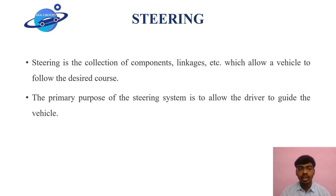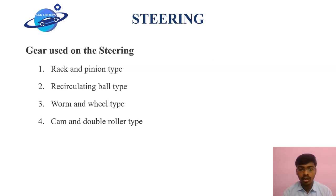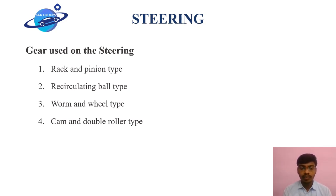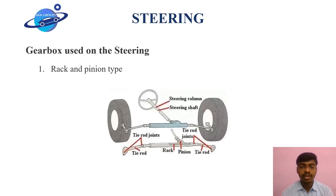The primary purpose of the steering system is to allow the driver to guide the vehicle. Now let's have a clear look at the gears used in the steering system. This is divided into four parts: the first one is rack and pinion type, the second one is recirculating ball type, the third one is worm and wheel type, and the fourth one is cam and double roller type.